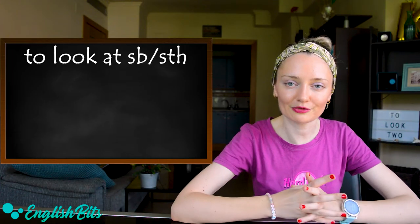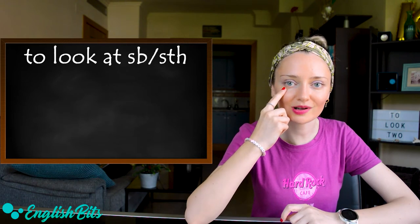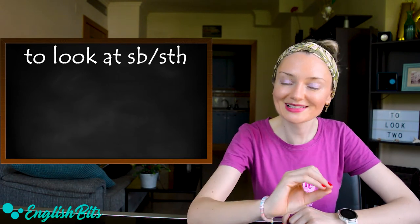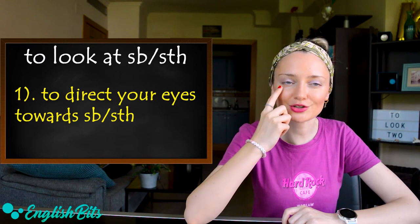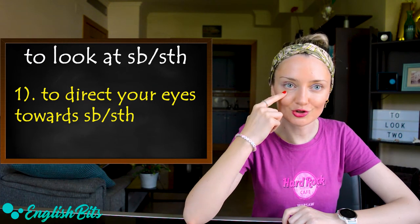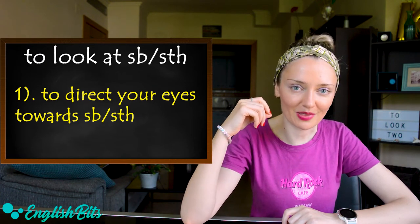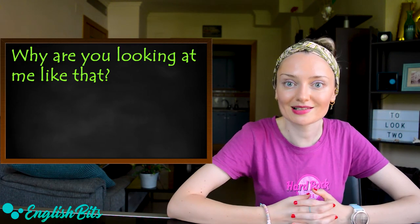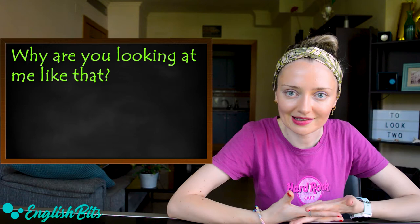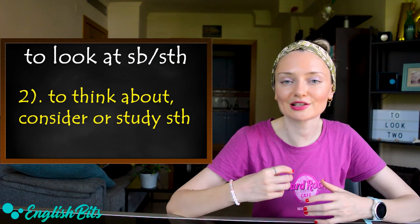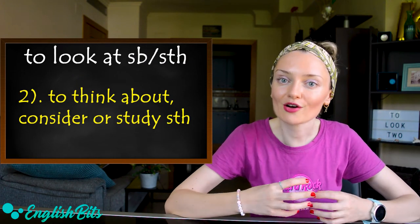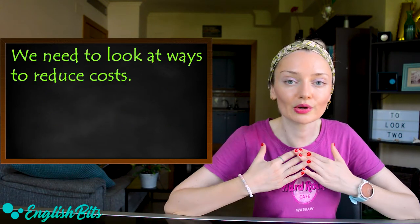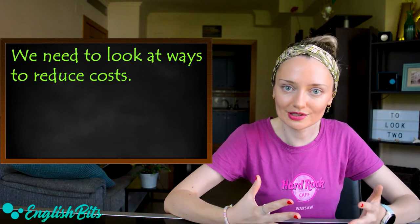Number four, a super common phrasal verb: to look at someone or something. It also has different meanings. The first one is to direct your eyes towards someone or something. For example, if someone's staring at you, you could ask: why are you looking at me like that? The second meaning is to think about, consider, or study something. For example: we need to look at ways to reduce costs.